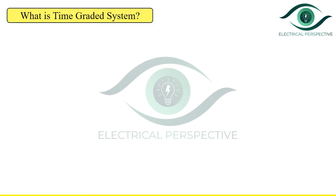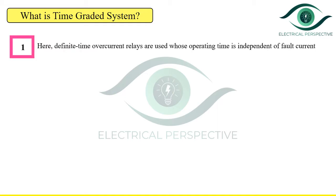What is a time graded system? It is a scheme of overcurrent protection in which time discrimination is incorporated. The time setting of the relay is so graded that in the event of a fault, the smallest possible part of the system is isolated. Here we use definite time overcurrent relays whose operating time is independent of the fault current.